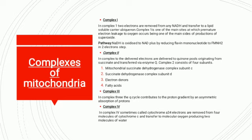In Complex 1, two electrons are removed from NADH and transferred to a lipid-soluble carrier, ubiquinone. Complex 1 is one of the main sites at which premature electron leakage to oxygen takes place. The pathway involves NADH being oxidized to NAD+, by reducing flavin mononucleotide to FMNH2 in a two-electron step.